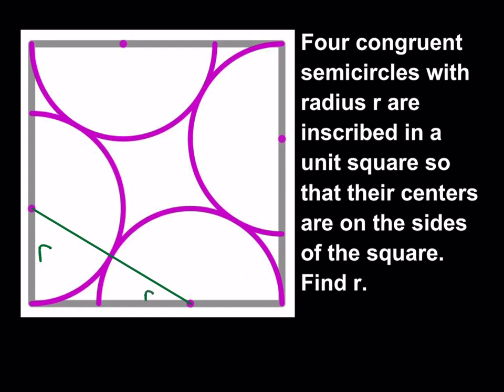Now obviously we do get a right triangle here and we want to use the Pythagorean theorem. And how do we do that? Well this is also r, this is r, this is r, and this is also r. A lot of r's.